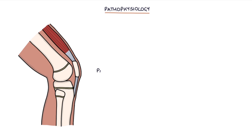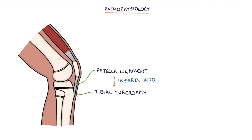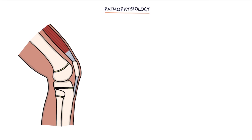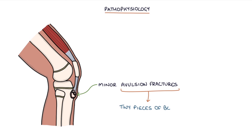Let's talk about the pathophysiology. The patellar ligament or the patellar tendon inserts into the tibial tuberosity. This is a small lump that you can feel just below the kneecap at the top of the lower leg. In patients with Osgood Schlatter disease, multiple minor avulsion fractures occur where the patellar ligament pulls away tiny pieces of the bone. This leads to growth of the tibial tuberosity, causing a visible lump below the knee.